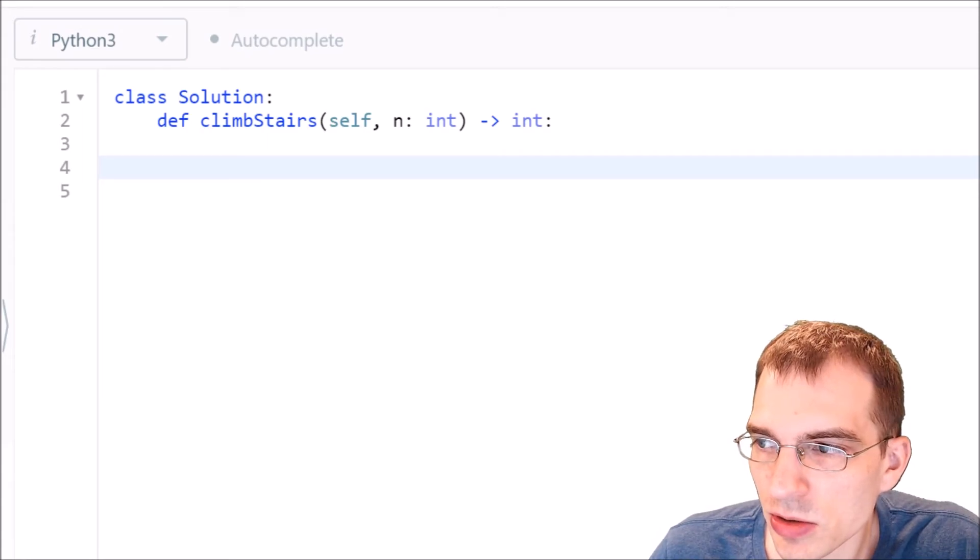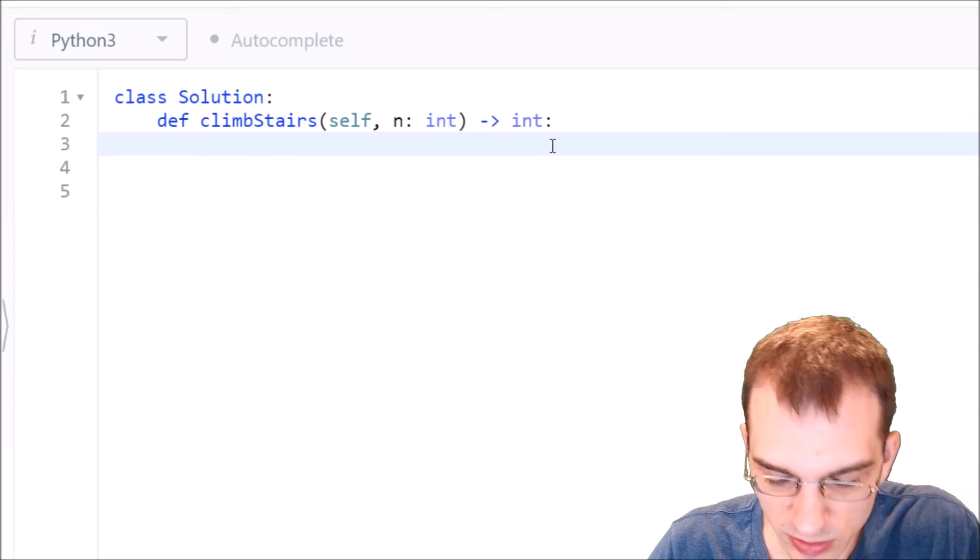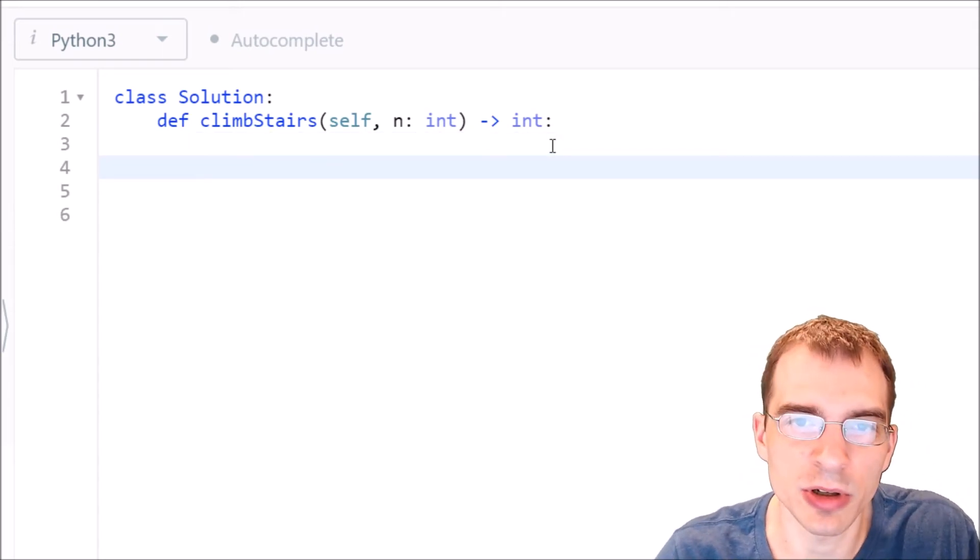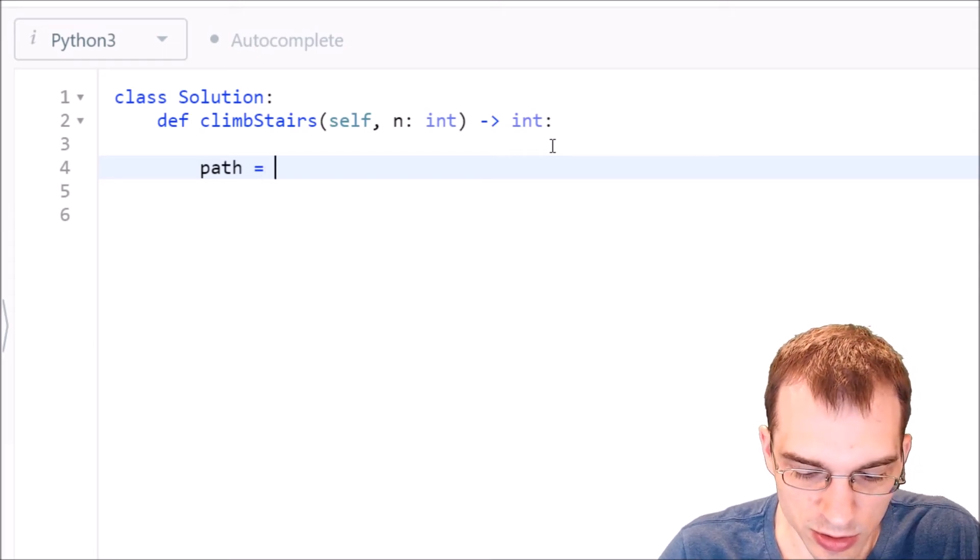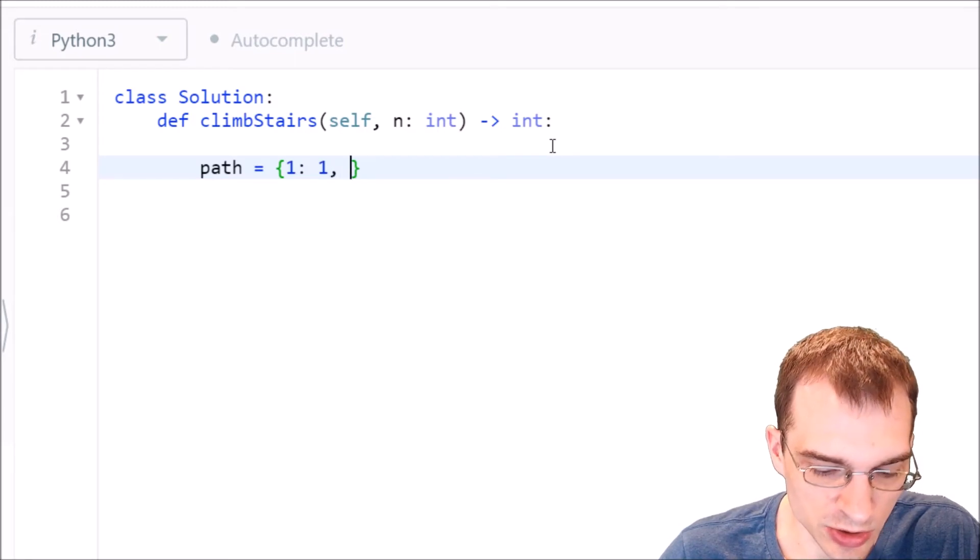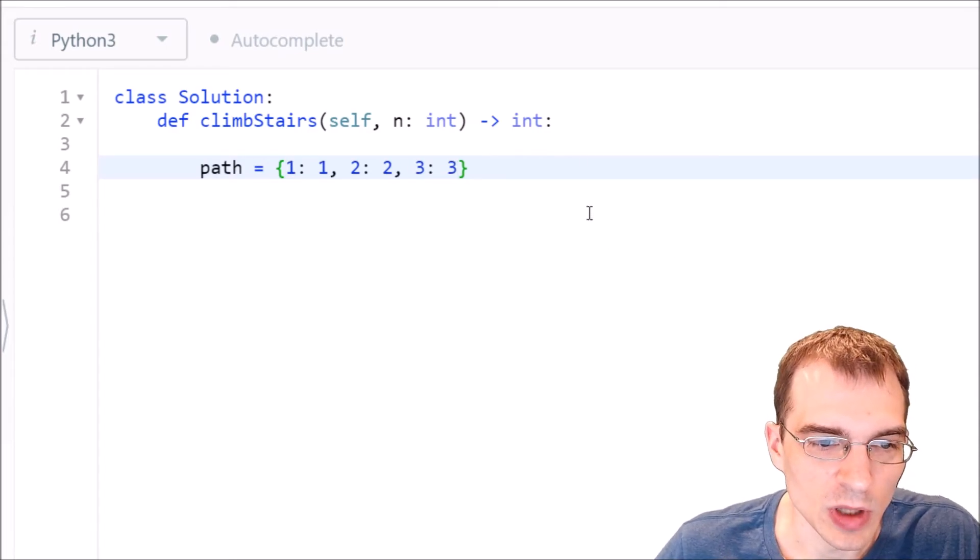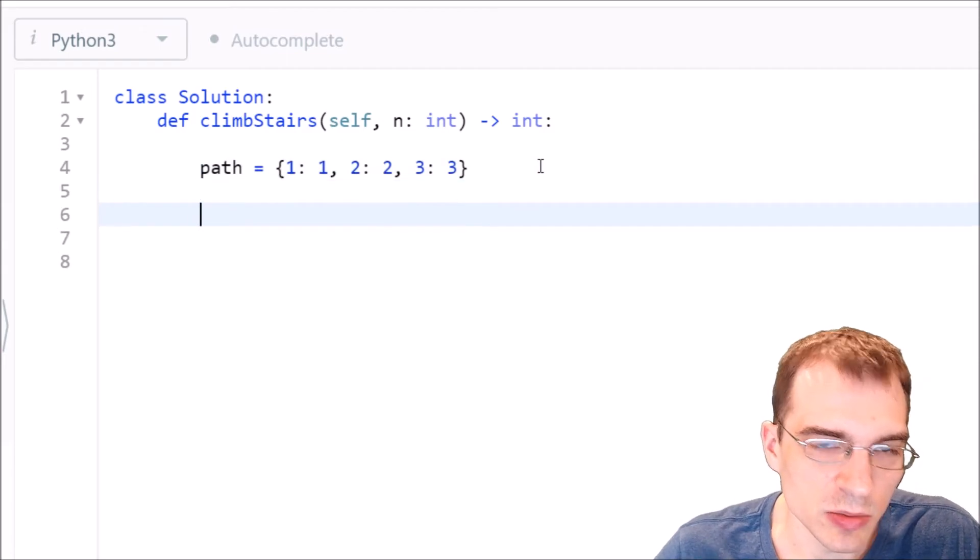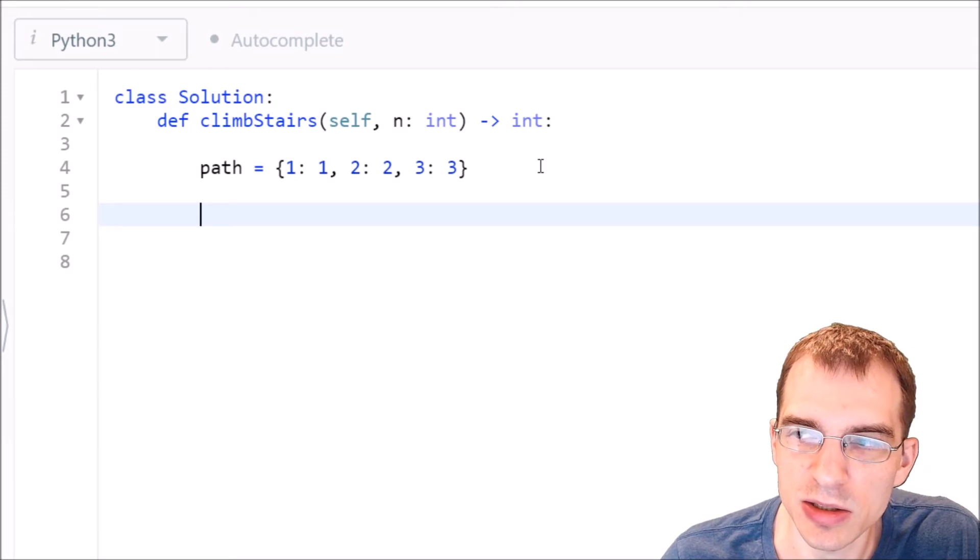So all we need to do is start off with a dictionary containing these solutions we already know. So we'll say path equals a dictionary. It's going to contain all the sequences we already know. So we know one stair is one, two stairs is two, and three stairs is three.